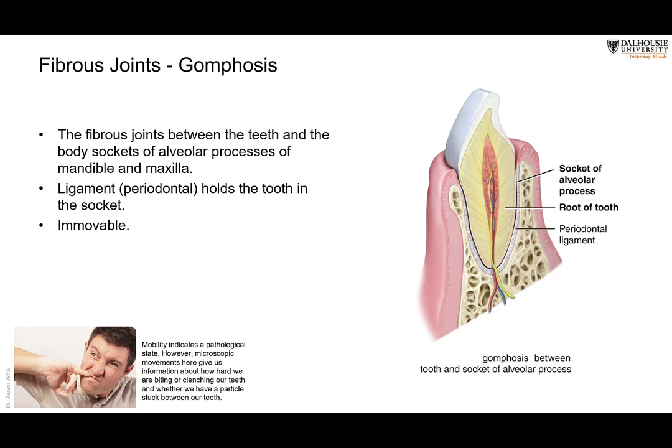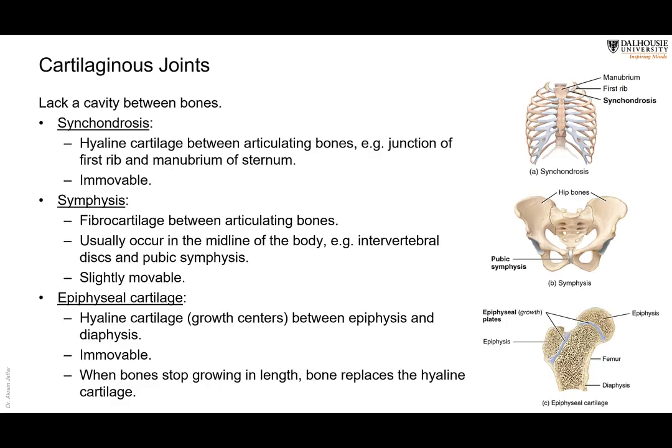If there is noticeable mobility in this joint, then it is a pathological condition. That concludes the first type of joints — fibrous joints. Now we move to the cartilaginous joint.